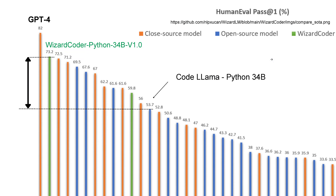And we asked ourselves: how is it possible that the official Meta version of CodeLlama in the Python fine-tuned version of 34 billion trainable parameters performs so much worse compared to WizardCoder Python in the same size 34b? How do you achieve a jump of 20 points in a specific benchmark like HumanEval?